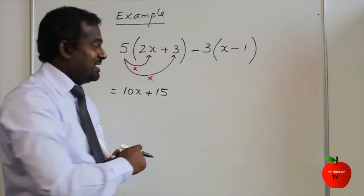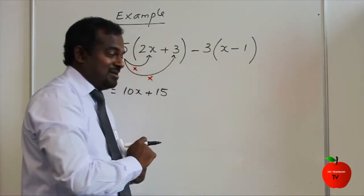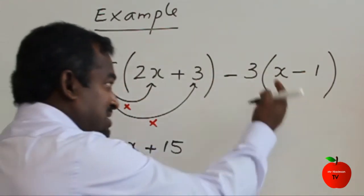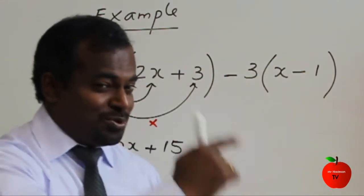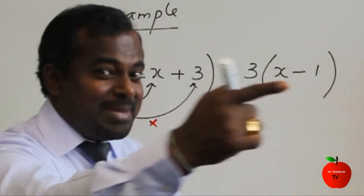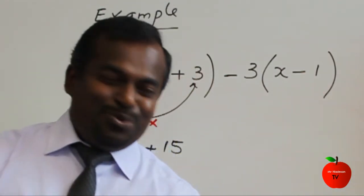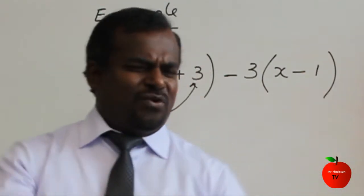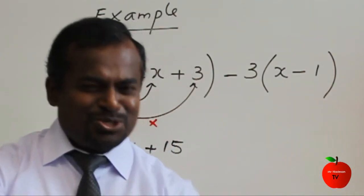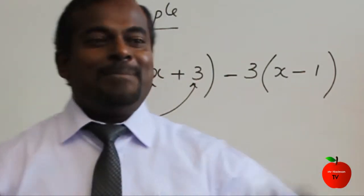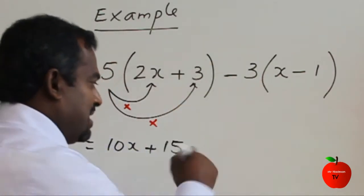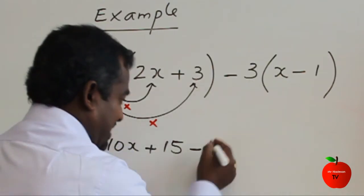So we got a minus here. Now minus, then plus — because there's no sign, it means it's plus. Remember, I already explained that SNL method: sign, number, letter. When you expand the single brackets for any question, you have to make sure. SNL — sign, number, letter. So sign: minus into plus comes to minus, then 3x.